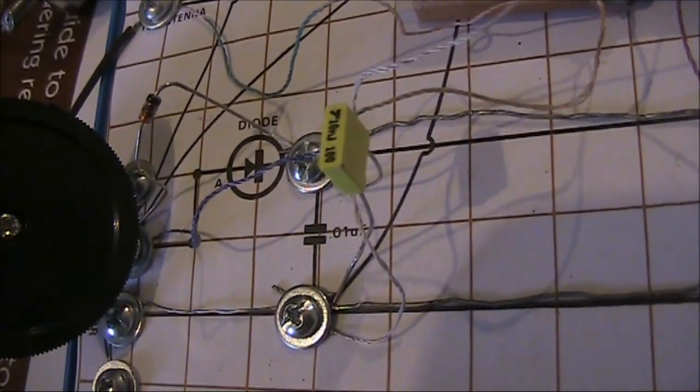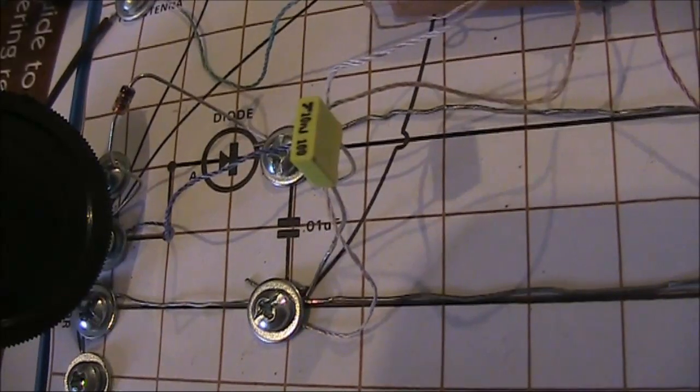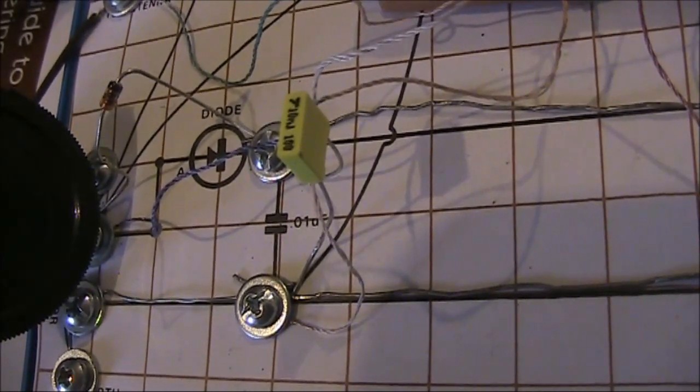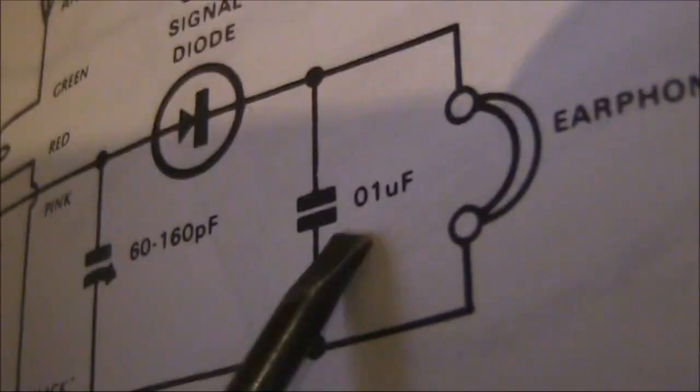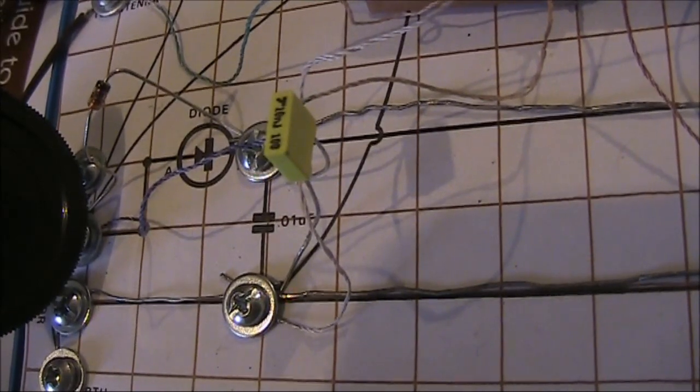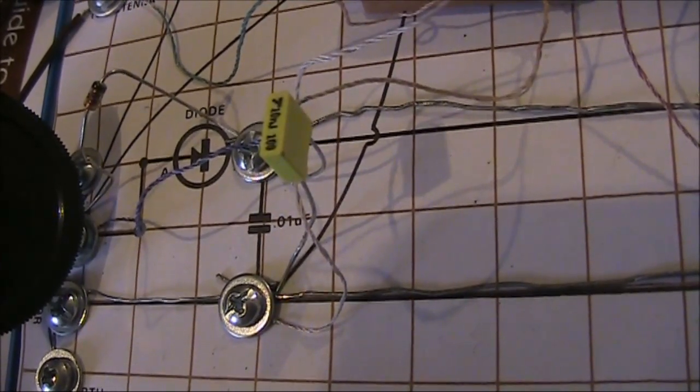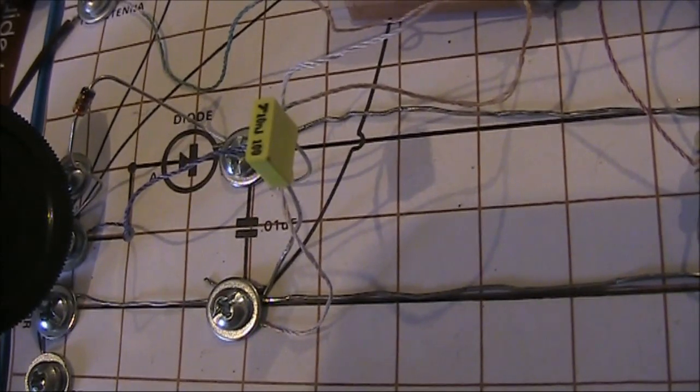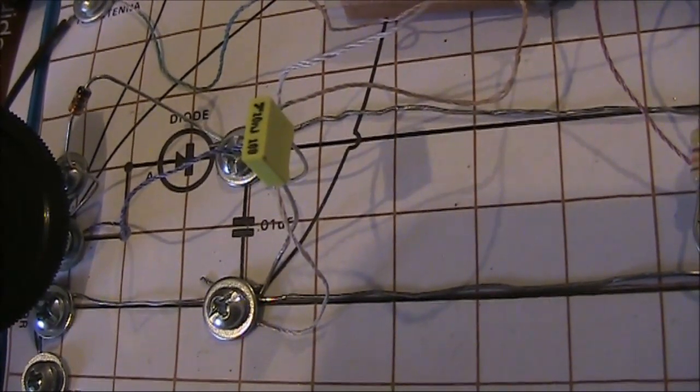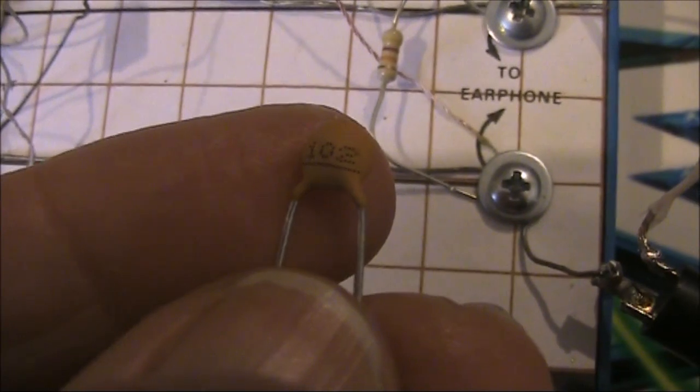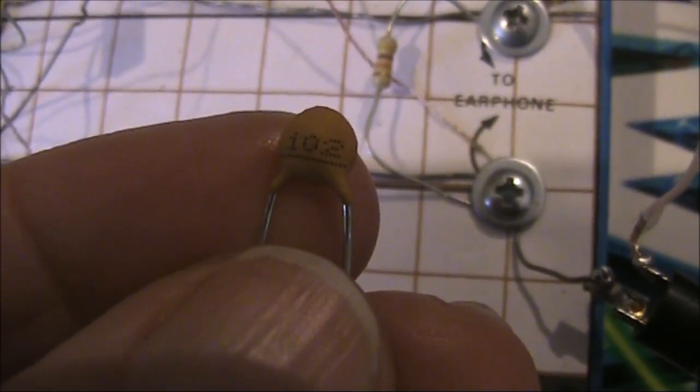Something else I'm a bit curious about is the 10 nanofarad from the diode to the earth. That is a higher value than I would expect in this part of the circuit. Since we're talking about very high audio impedances, at least if you're using the crystal earpiece, you want a capacitor with a low value, otherwise you start to attenuate the audio. So the next thing I'll do is take that capacitor out and see if that changes reception. Then I might try a lower value of capacitor, like this one nanofarad, that I would expect in that position of the circuit.